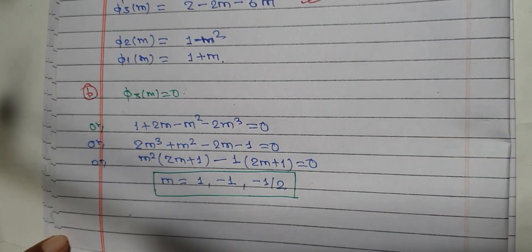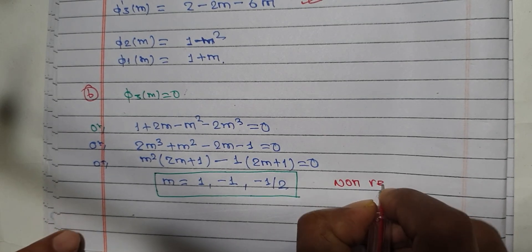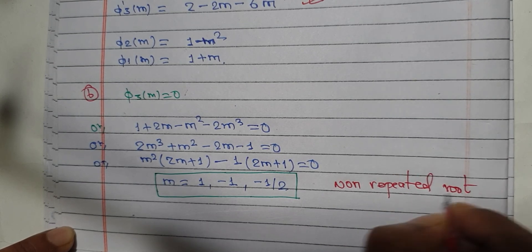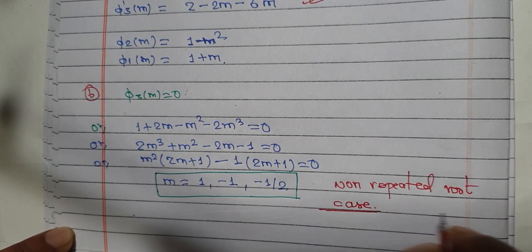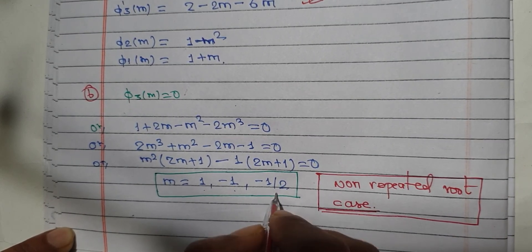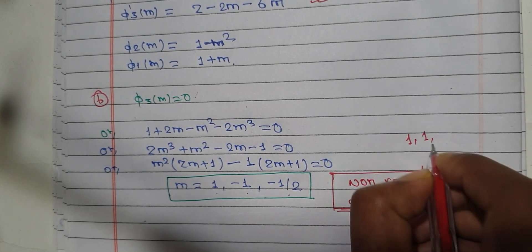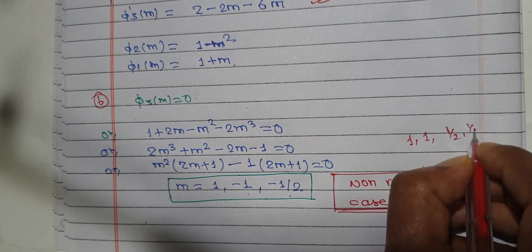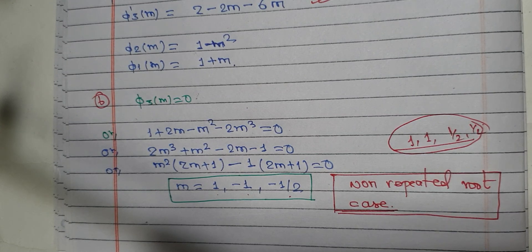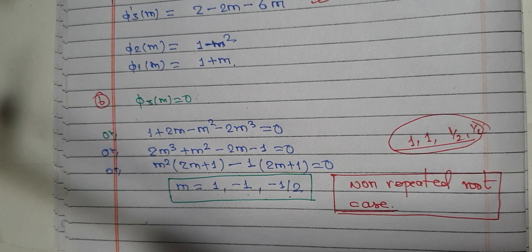Calculate for m values. These are non-repeated roots — one, minus one, and minus one by two — three different values. When they are repeated roots, we use a separate formula. Note that x cube and y cube: both absent means only one present case applies. Thanks for watching the video.